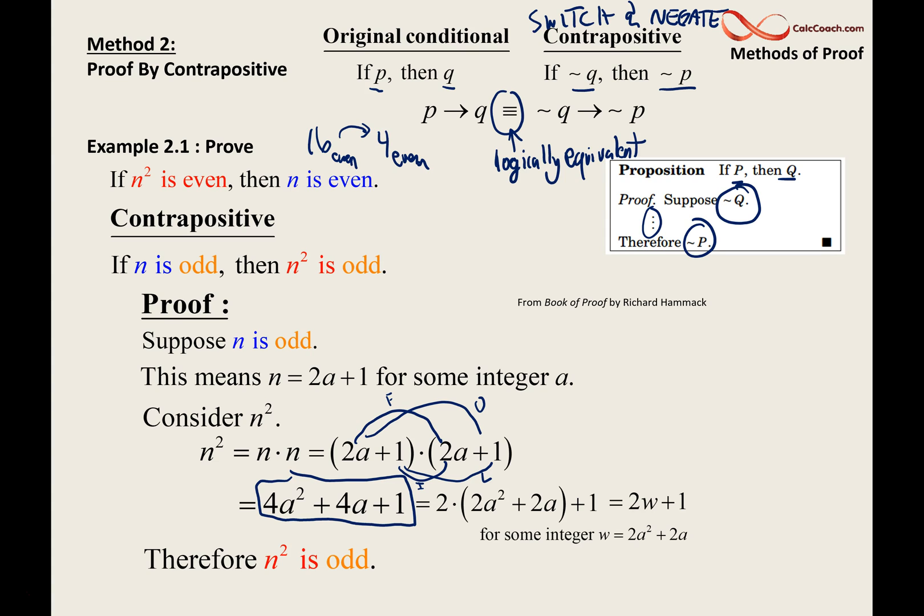If n is odd, then n squared is odd. The fact that you proved that is equivalent to you proving the original. They have the same truth value. Whenever one is true, the other one is true. So on top of you proving this, you also proved the original that if n squared is even, then n is even. Proof by contrapositive. A direct proof on the contrapositive. Switching and negating. That's our first example.